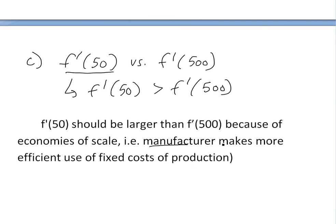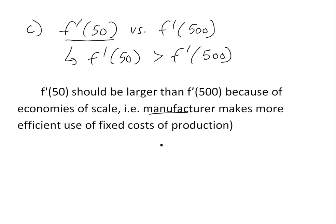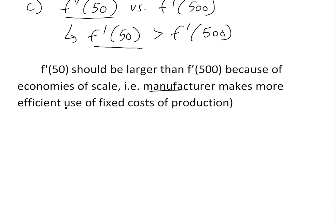Economics of scale basically means the manufacturer makes more efficient use of fixed costs of production. If you produce a small number, there's a learning curve — but as you produce more and more, you become more efficient and can build things faster at a cheaper cost, possibly with new technologies. So the rate of change of production cost should be higher initially, but it levels off as you get smarter and more efficient.